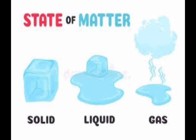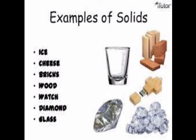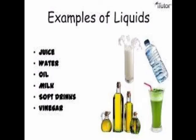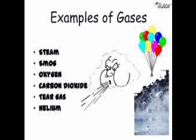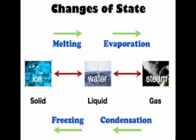In this chapter, we have learnt about three states of matter. They are solid, liquid, and gas. We also learnt about some examples and properties of solids, liquids, and gases. Next, we learnt about changes of states. The changes of states are called melting, evaporation, freezing, and condensation.